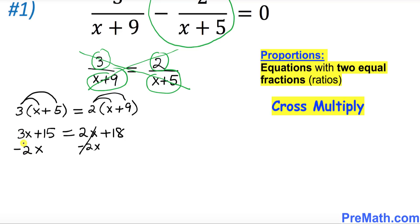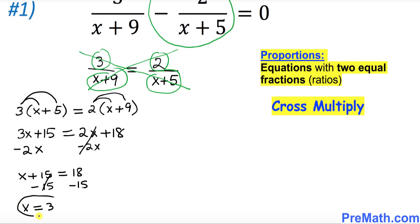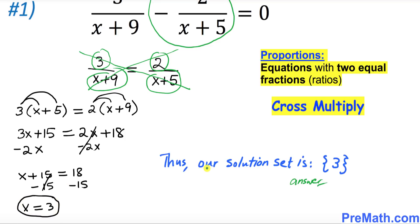3x minus 2x gives us simply 1x, so we have x plus 15 equals 18. I want you to subtract 15 from both sides, so x turns out to be simply 3, which is our solution. Thus our solution set is x equal to 3, and that is our answer.